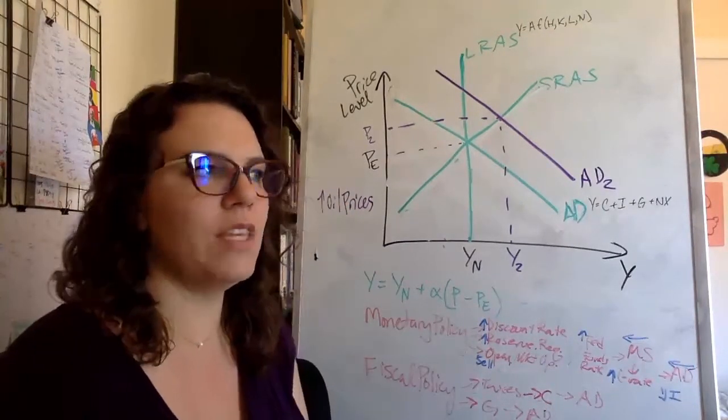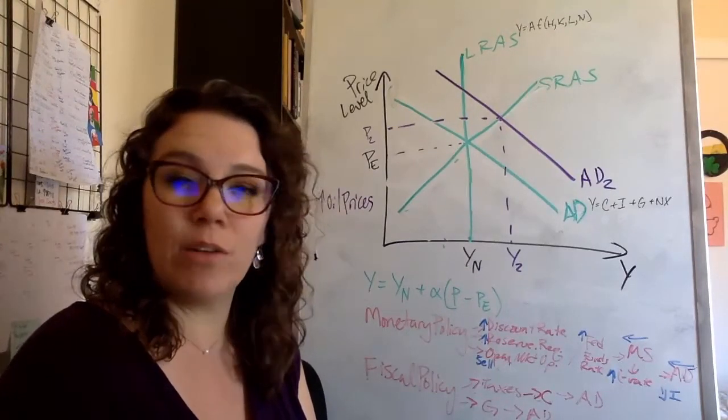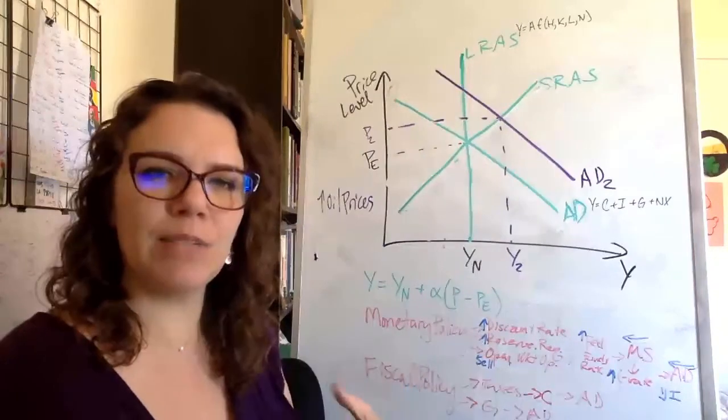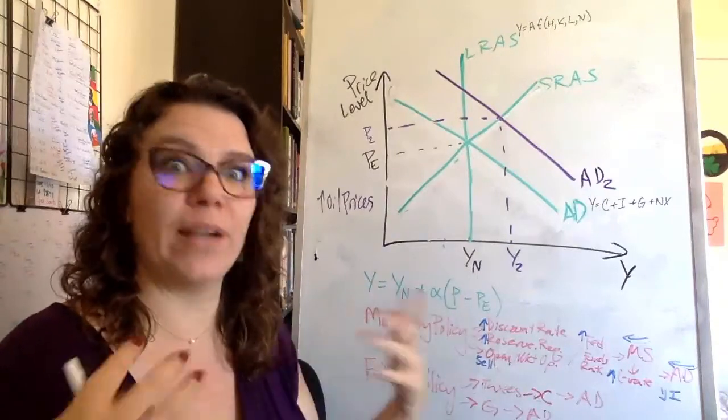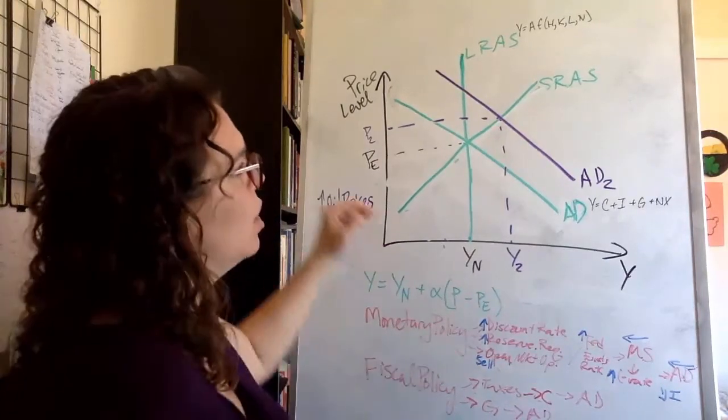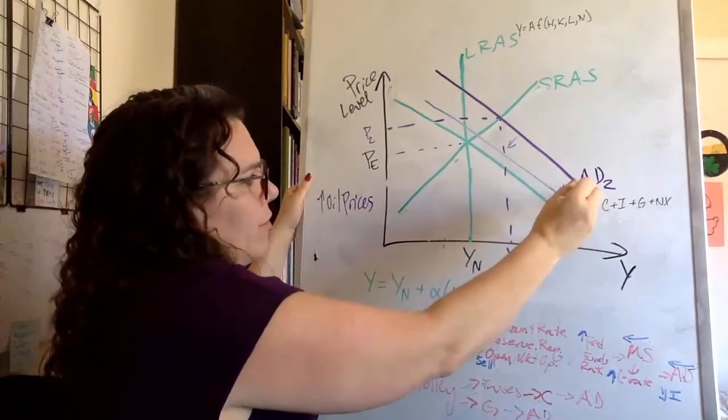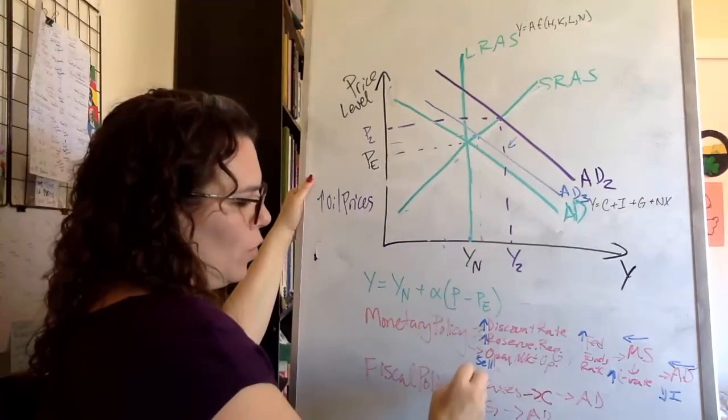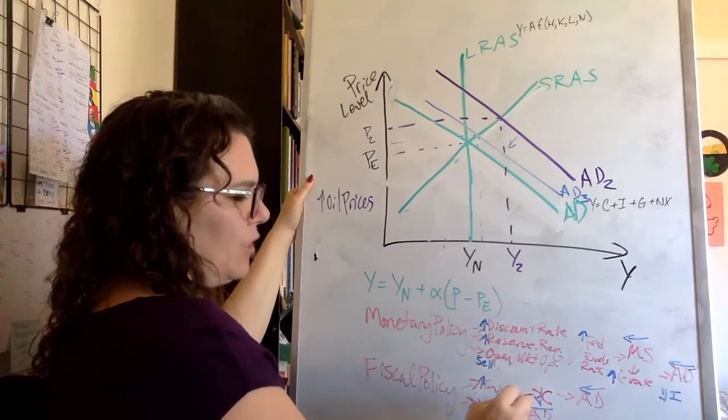If they want to slow things down, what they're going to do is they're going to raise the discount rate, raise the reserve ratio, or sell bonds. Any of these things will target a higher federal funds rate, shift the money supply in, raising the interest rate, decreasing investment spending and shifting aggregate demand back in. And this is an example of the expression, and I think they reference it in the rap video, but this idea that the Federal Reserve's job is to take away the punch bowl when the party's getting too excited. This idea that sometimes the economy is running too hot and we have to slow it down to prevent a bigger crisis later on. So we can see monetary policy do those things to try and shift aggregate demand back in and control inflation.